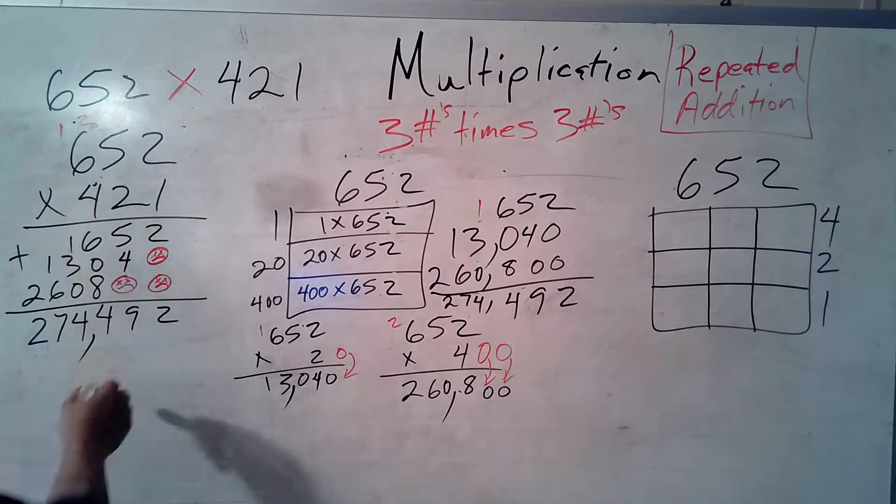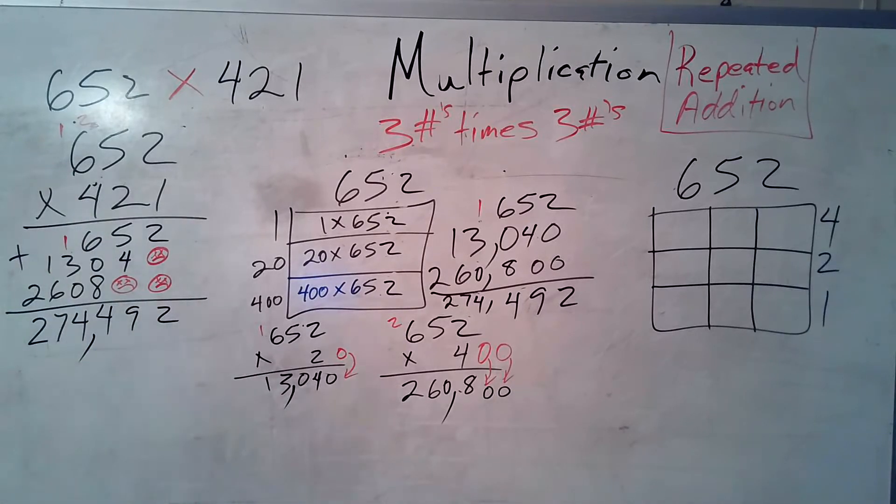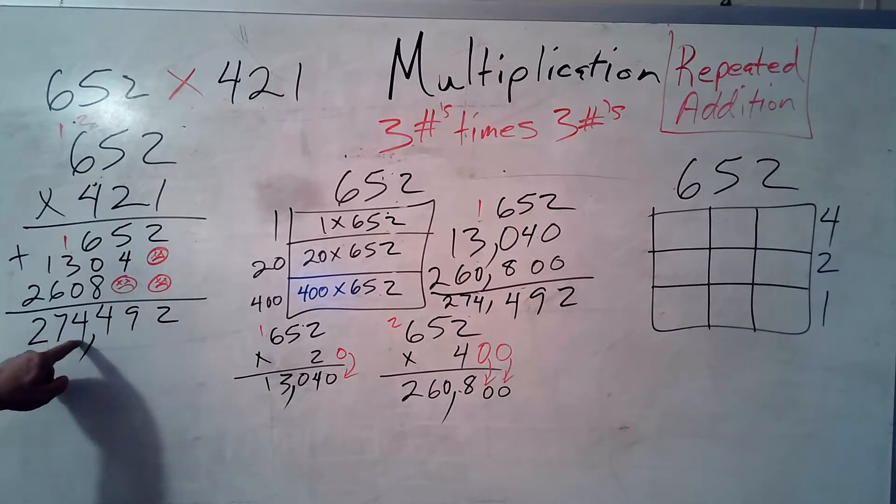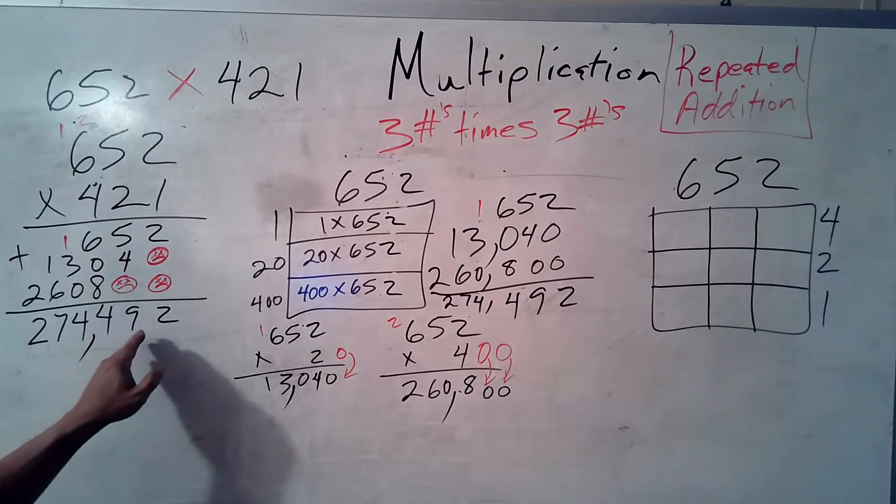That's a 2. That's a 9. That's a 14. Carry the 1. 3 plus 1 is 4. 6 plus 1 is 7. 2 plus nothing is 2. So your final answer is 274,000, because the comma says 1,000, 492.